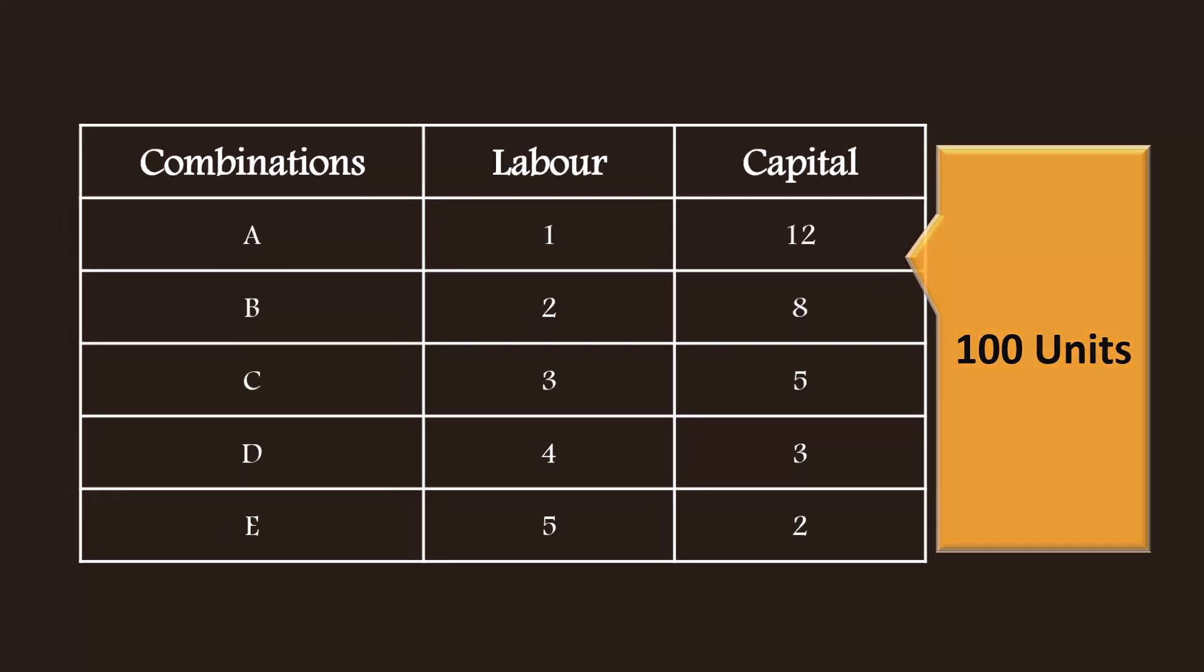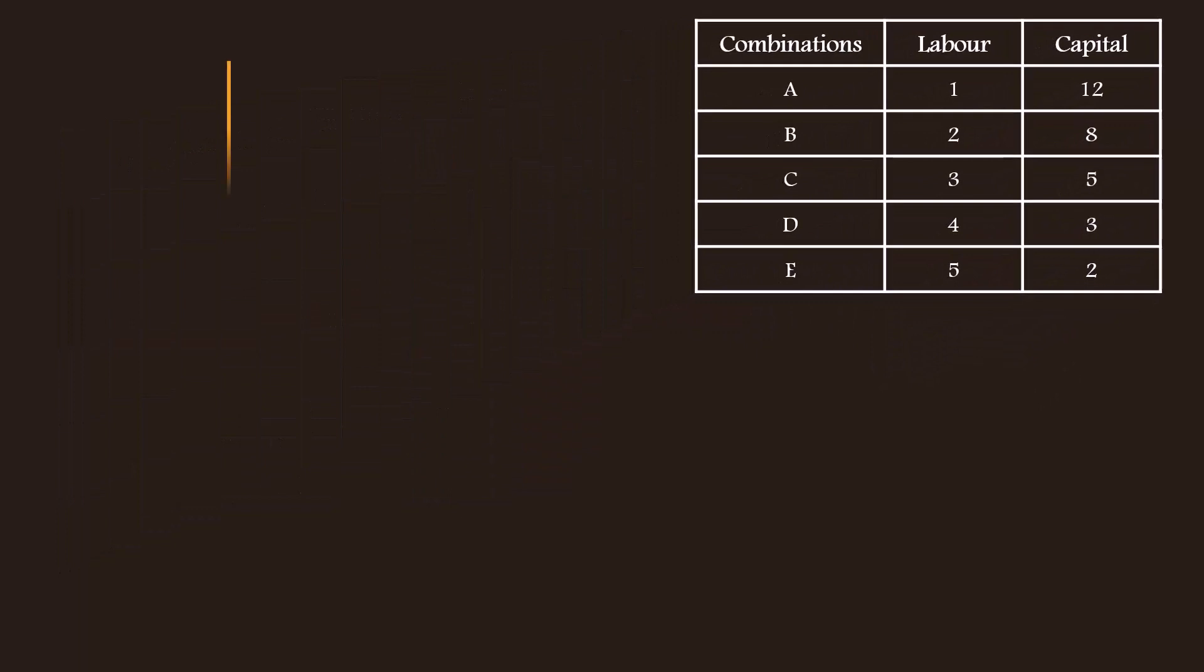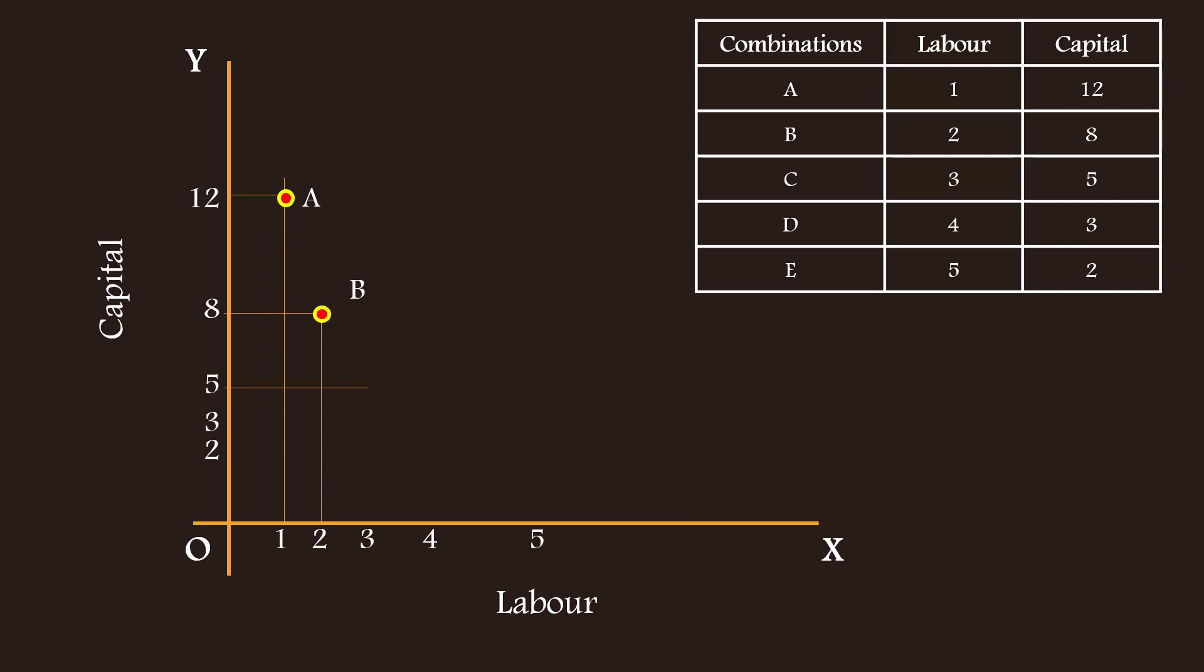Let us represent this table in the form of a graph. First, plot the points A, B, C, D and E. Join all the points with a smooth curve. The curve you get is called Isoquant curve. Let us name it as IQ.